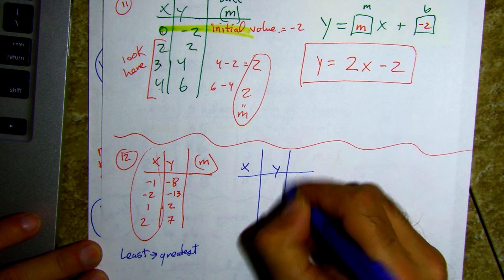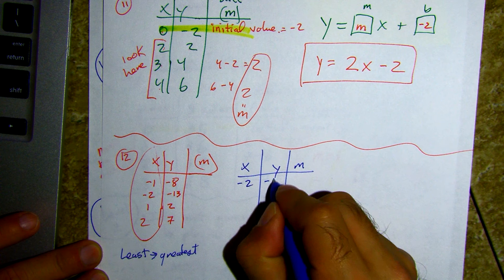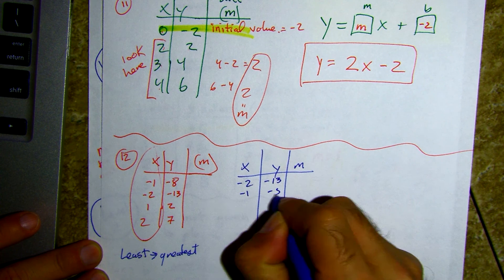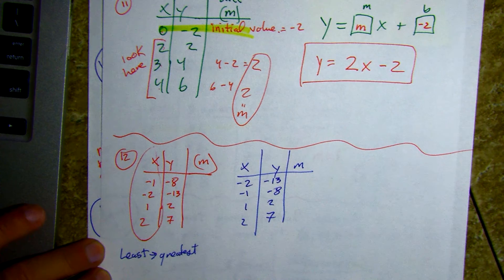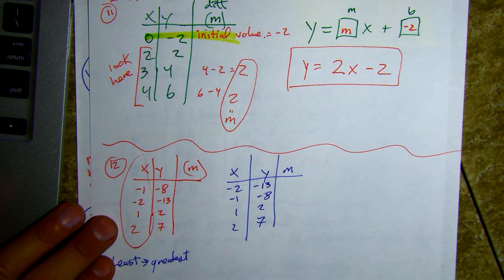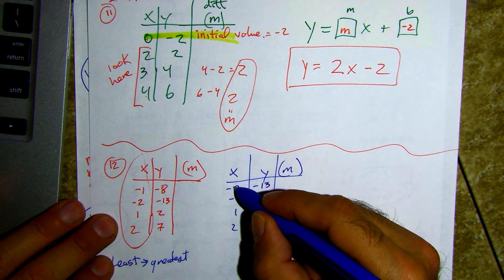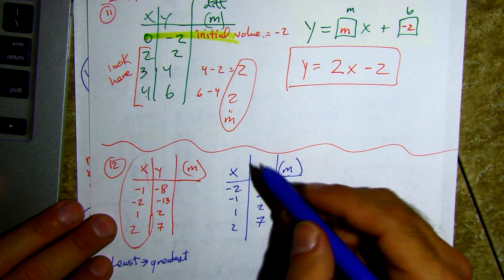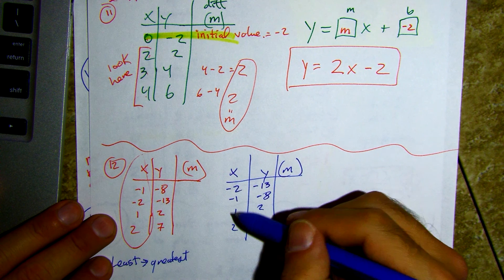I'm going to put negative two, negative thirteen first; then negative one, negative eight; then one, two; then two, seven. Negative two is less than negative one — it's underwater a whole other foot. Negative one to one, and then one to two — these are helpful.